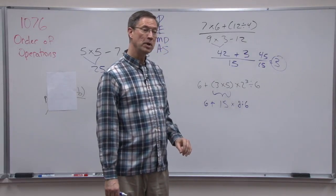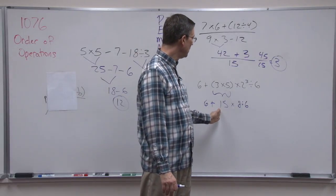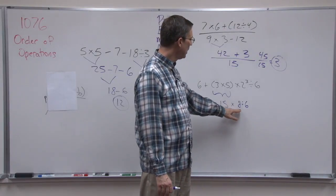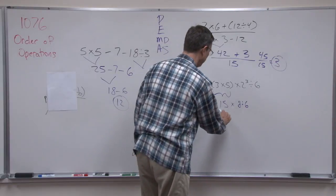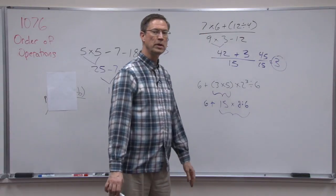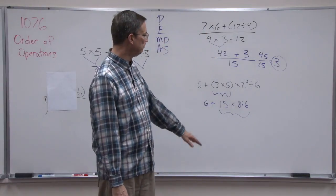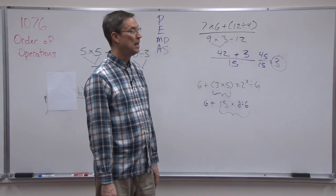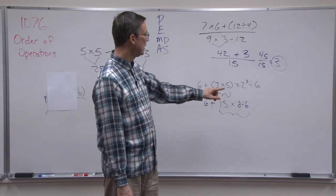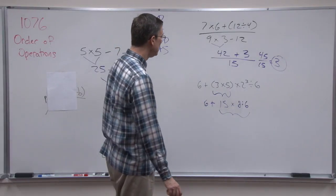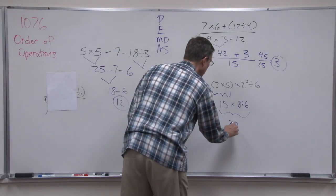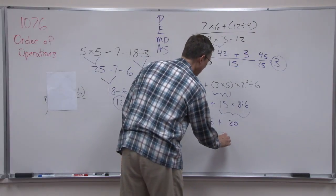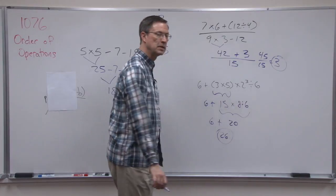Now in the order of operations, I need to do going from left to right. I have multiplying and dividing. I need to do that all in the same step. 15 times 8 is 120. 120 divided by 6 would be 20 for that part. And then I bring down the 6 plus 20. And now I can add that and get 26.